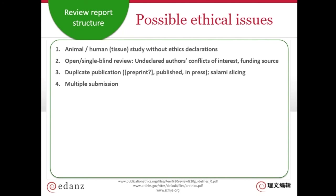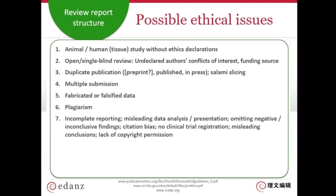You might recognize the paper because you've read it for another journal as a peer reviewer — that's a double submission, and authors aren't allowed to submit the same paper to different journals at the same time. Look at the data: are they believable or too good to be true? Are the photographs believable, or do you notice parts that have been copied? Has the text been plagiarized? Other issues include incomplete reporting, misleading presentation, omitting findings, citation bias, no registration for clinical trials, misleading conclusions, or lack of copyright permission.